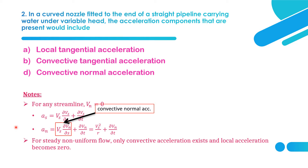For any streamline, Vn is zero. For steady non-uniform flow, only convective acceleration exists and local acceleration becomes zero — meaning ∂Vn/∂t and ∂Vs/∂t are equal to zero, and only the convective term such as Vs·∂Vn/∂s exists.